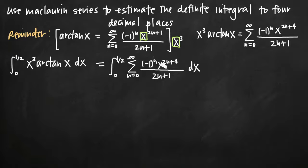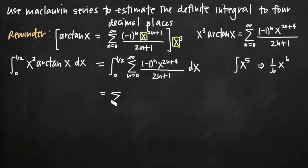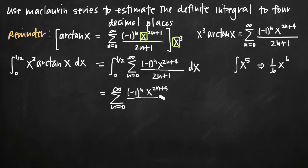This looks complicated, but it really isn't. The terms that only involve n — negative 1 raised to the n power and 2n plus 1 — are just constant coefficients on our x to the 2n plus 4 term. When we integrate, for example, the integral of x to the fifth gives us 1/6 x to the sixth, because we add 1 to the exponent to get 6 and then divide by the new exponent. We do the same thing here: instead of x to the 2n plus 4, we get x to the 2n plus 5. So we get the sum from n equals 0 to infinity of negative 1 to the n, x to the 2n plus 5, divided by 2n plus 1 times 2n plus 5, evaluated on the interval 0 to 1/2.